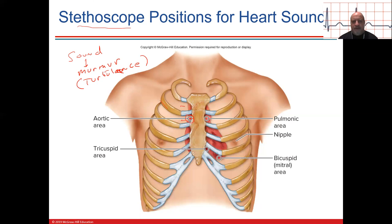The pulmonary valve — sometimes called the pulmonic valve — is auscultated at the second intercostal space, parasternal to the left. The tricuspid valve is around the fifth intercostal space, parasternal. The bicuspid valve is at the same intercostal space but along the midclavicular line, sometimes called the nipple line.